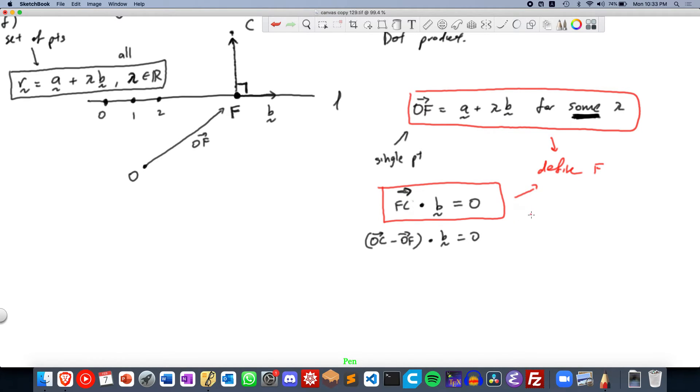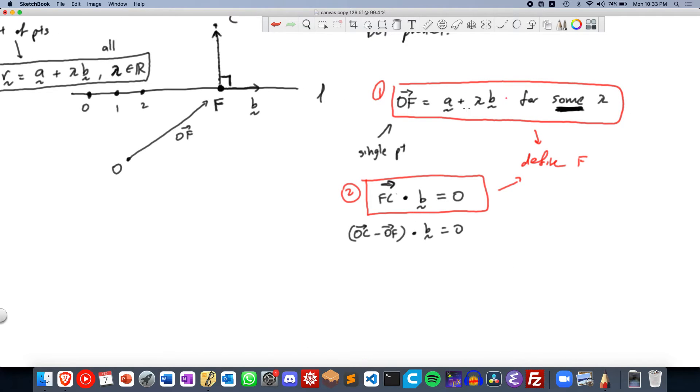The second equation over here tells you that F is the perpendicular projection from C onto the line, such that FC dot B is 0. And the first equation tells you that F is the point on the line. So these two uniquely define F.